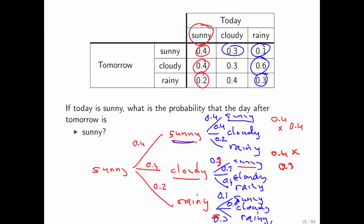And the probability of it being sunny, rainy, and then sunny again is 0.2 times 0.1. And the probability, therefore, given that today is sunny, it being sunny the day after tomorrow is a matter of adding this to that to that.